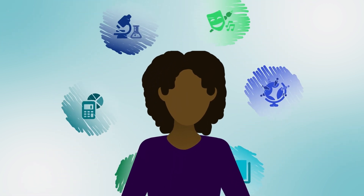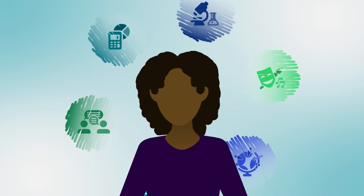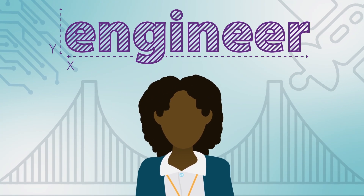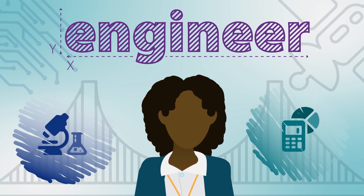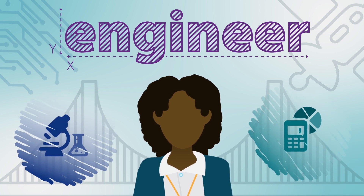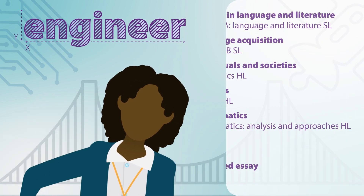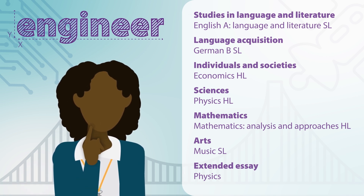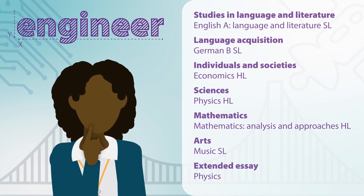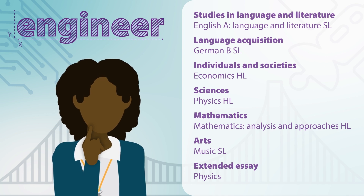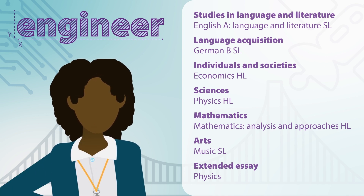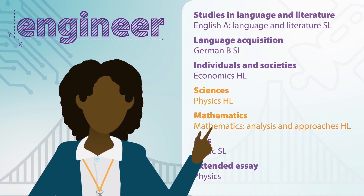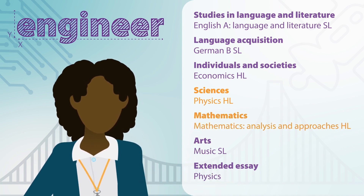Let's take a look at some subject combination examples. What if you want to be an engineer? You will need to apply scientific and mathematical principles to design solutions and meet specific needs. A combination of subjects like this will likely prepare you for engineering-focused university courses. For example, someone looking to gain entry to an engineering program may need to take Physics HL and Mathematics Analysis and Approaches HL to build analytical expertise.